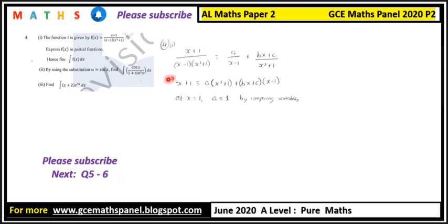This is actually a straightforward one. Looking at the denominator, we have a linear factor and a quadratic factor x squared plus one. The quadratic factor is written as Bx plus C over x squared plus one. If this video is too fast, go to the bottom right of your YouTube page and reduce the speed to 0.75.